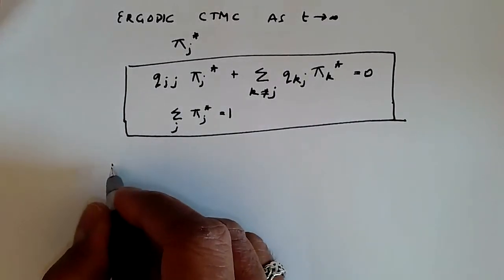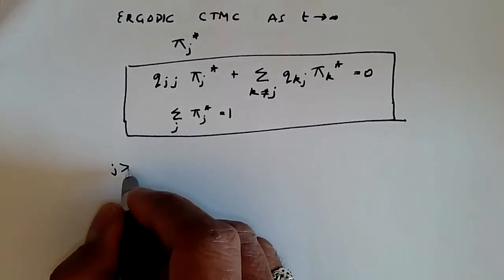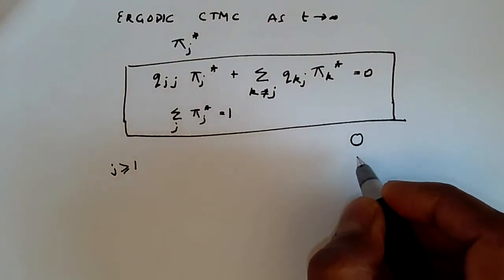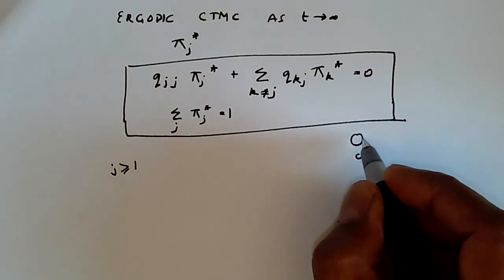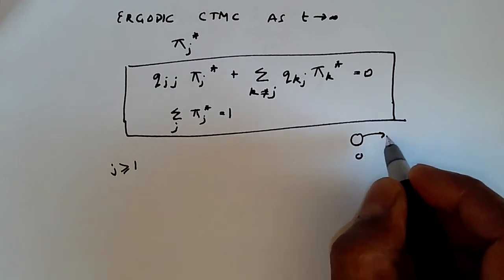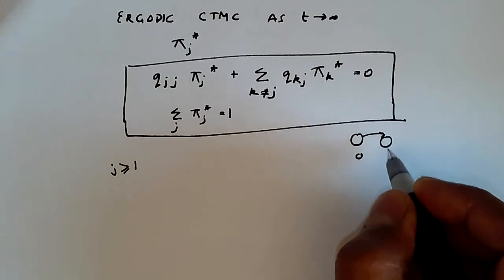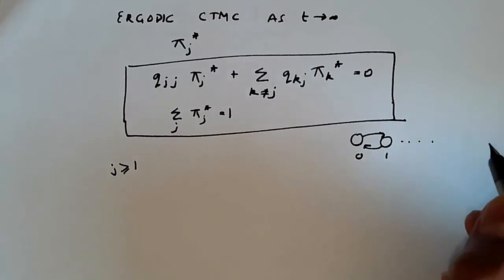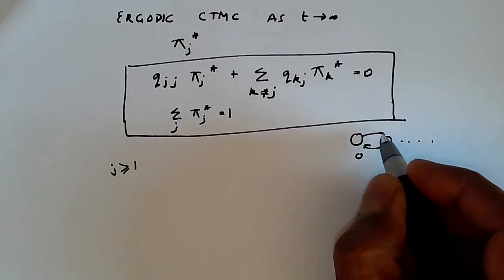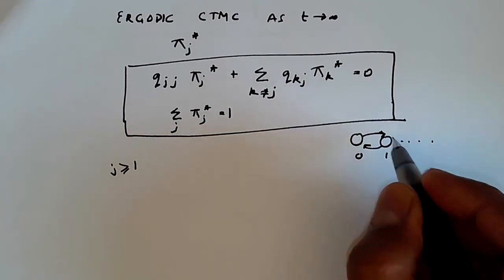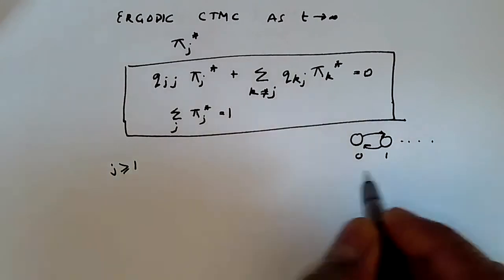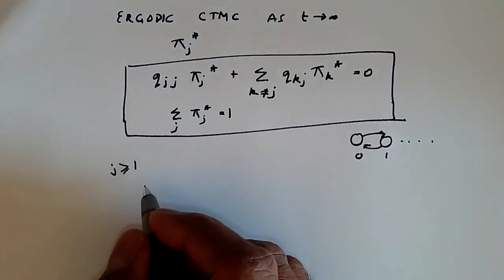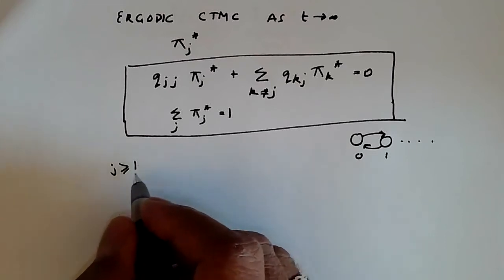A birth-death process always has one endpoint at state 0, because you can't go below 0 population, and you go to 1 from there. Subsequent states can be as many as you want — the process can be infinite or unbounded in one direction, but bounded in the other. So we need to be careful about state j equals 0 and write it down properly.